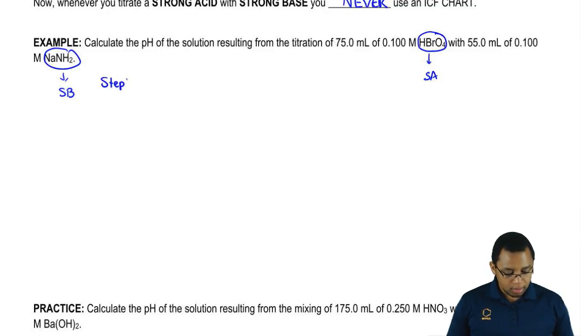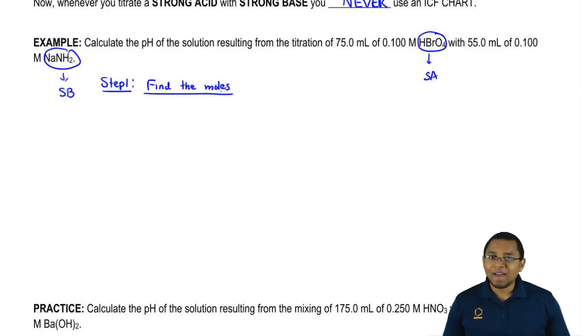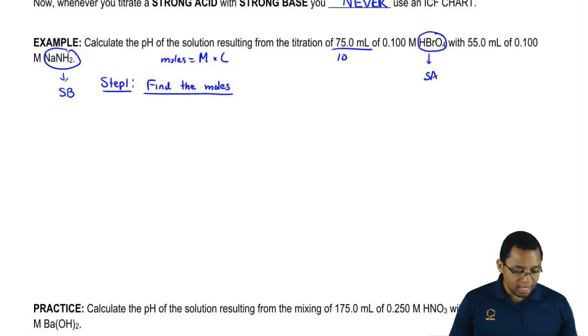We're going to say step one is find the moles. Remember how do we find moles? Remember moles equals molarity times liters. Divide the mLs by 1,000, multiply them times their molarities.